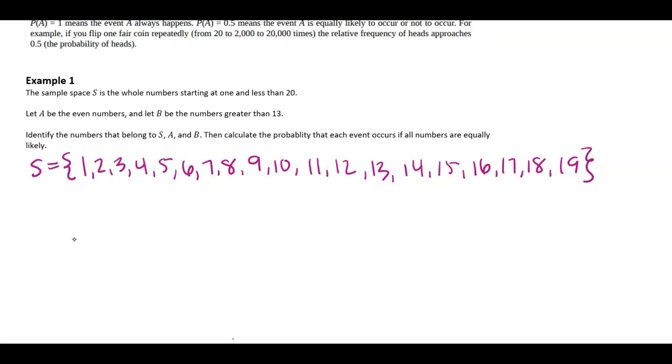A is going to be the even numbers. So that's going to be 2, 4, 6, 8, 10, 12, 14, 16, and 18. And B is going to be numbers greater than 13. So 14, 15, 16, 17, 18, 19. And we use this little squiggly bracket set notation to talk about like, these are the numbers that are in the set.